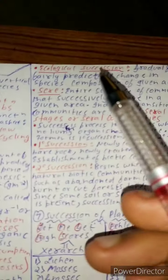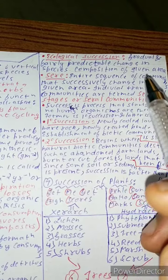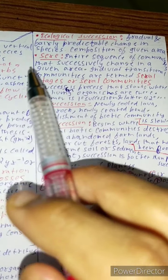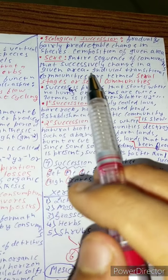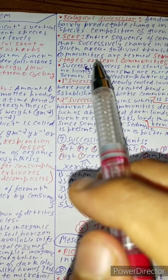Now let us know what is ecological succession. Gradual and fairly predictable changes in the species composition of a given area. The entire sequence of community that successfully change in a given area - individual transitional communities are called seral community or seral stages.